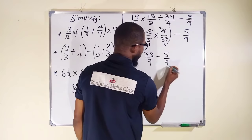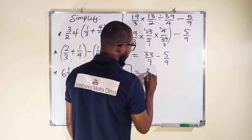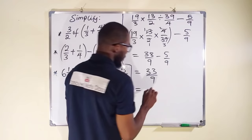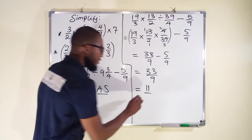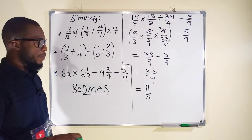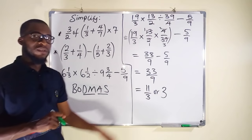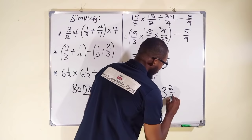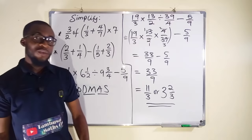Since 38 over 9 and 5 over 9 have the same denominator, we subtract the numerators: 38 minus 5 is 33, giving 33 over 9. Reducing: 3 goes into 33 eleven times, and 3 goes into 9 three times, giving 11 over 3. As a mixed number: 3 goes into 11 three times with a remainder of 2, so the answer is 3 and 2 over 3. Both forms are correct. That is all for today — thank you for watching, please share with your learning colleagues and subscribe to my YouTube channel for more videos.